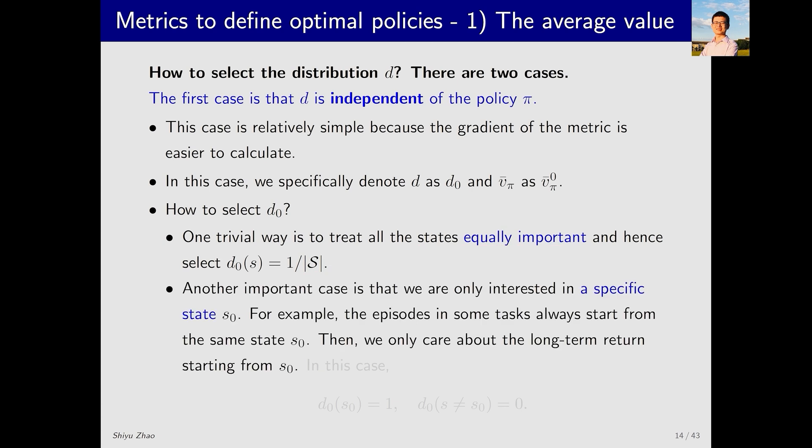Another important case is when I'm particularly interested in a specific state, say s₀. For example, the agent may always start from a particular state in a task. This state is denoted as s₀. Starting from that state, I want to maximize the return I can get. In this case, I can't treat all states equally. Instead, I can assign a weight of d₀(s₀) = 1 to s₀, and give all other states that are not s₀ a weight of 0. In this case, v̄π becomes vπ(s₀), and maximizing v̄π would be equivalent to maximizing the return I can get from starting at s₀.